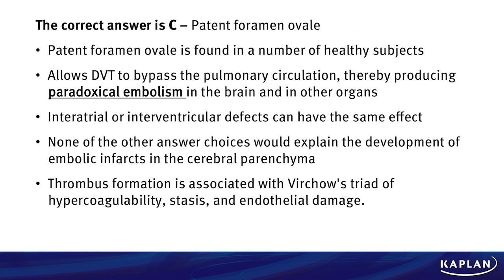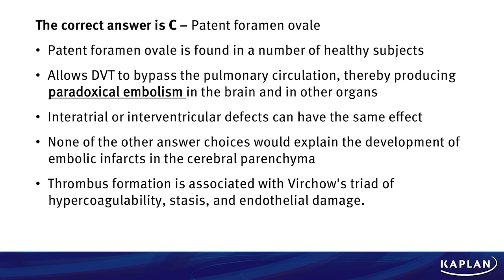The answer here is C, patent foramen ovale. A patent foramen ovale is actually found in a number of healthy subjects. The key here is that it allows a deep venous thrombosis, or DVT, to bypass the pulmonary circulation and thereby produces what is called a paradoxical embolism, which goes to the brain and other organs. None of the other answer choices would explain the development of embolic infarcts in the cerebral parenchyma — that's what's key here, this paradoxical embolism.